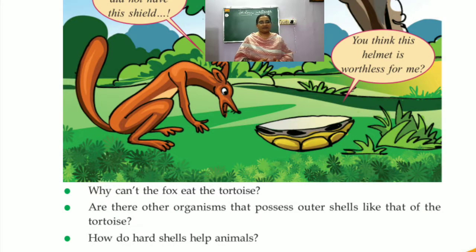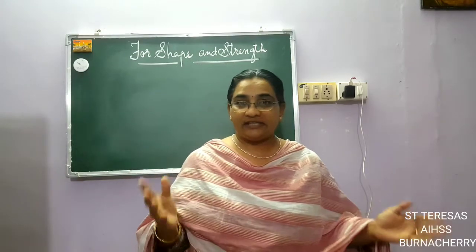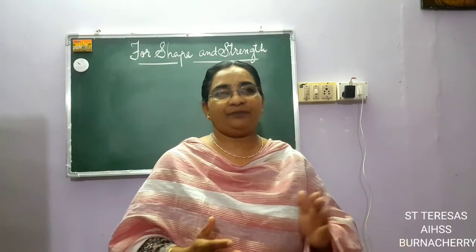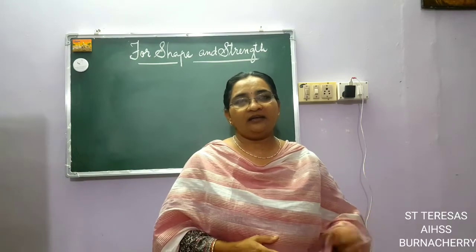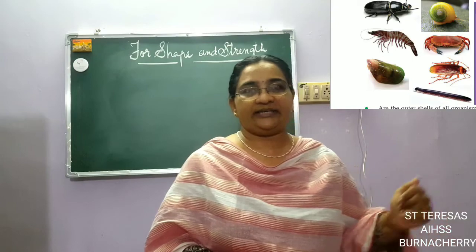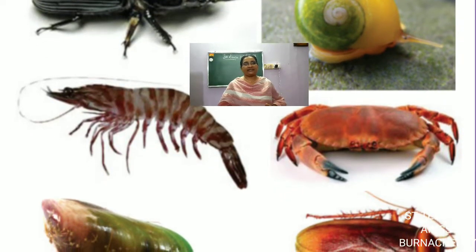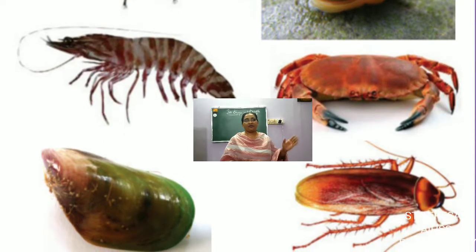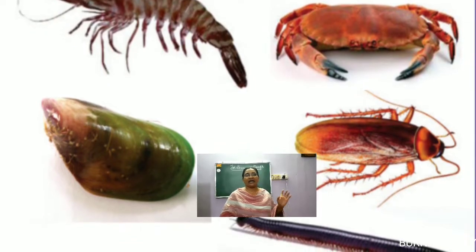Are there organisms that possess outer shells like that of the tortoise? How do the hard shells of these animals help them? They help protect the animals from their enemies. Look at the pictures in the textbook: beetle, snail, prawn, crab, mussels, cockroach, and centipede.